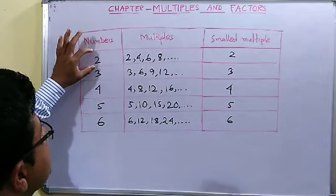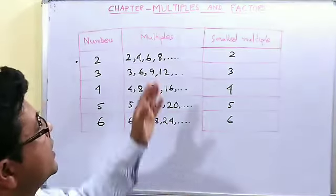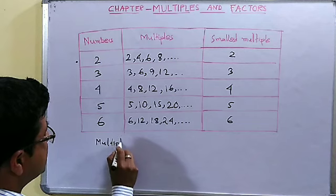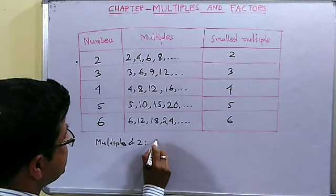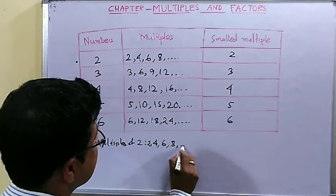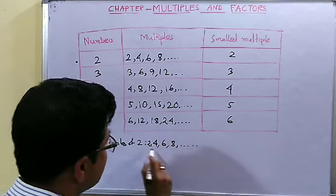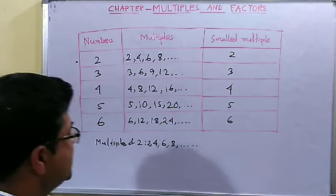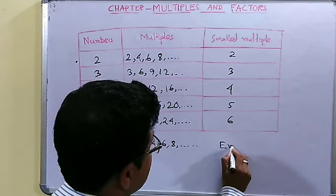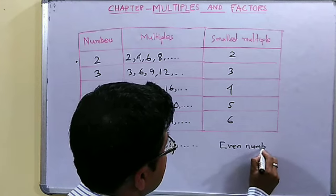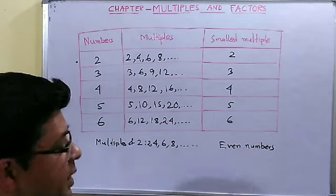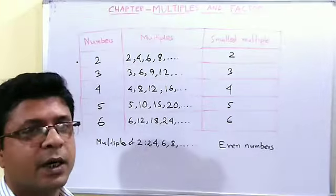Now we shall discuss about the number 2 because we will get a specific term here. The multiples of 2 are 2, 4, 6, 8 and it will go on. These numbers which are multiples of 2 are called even numbers. The multiples of 2 are called even numbers.